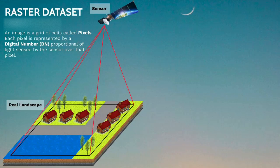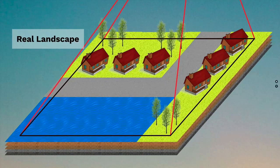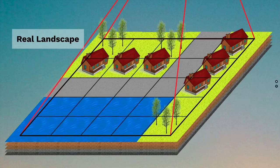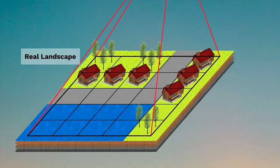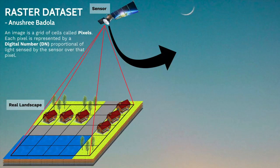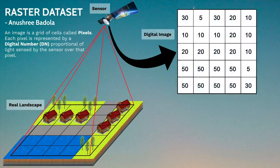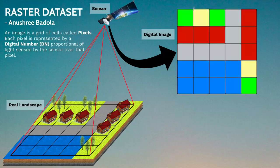We have a landscape here with different elements on the ground. When a satellite captures this area, it divides the landscape into a grid and records the observation of each cell, known as a pixel. Each pixel is represented by a digital number. These digital numbers are representative of the energy sensed by the sensor. In an image, we see these DN numbers portrayed as colors.